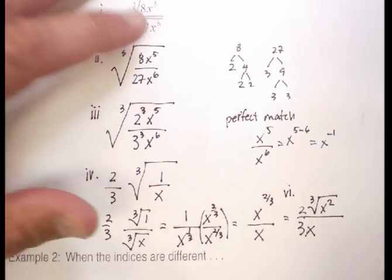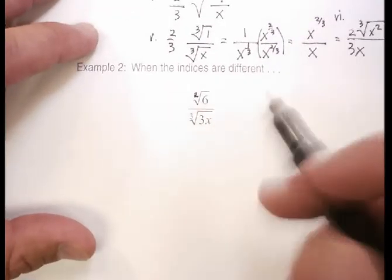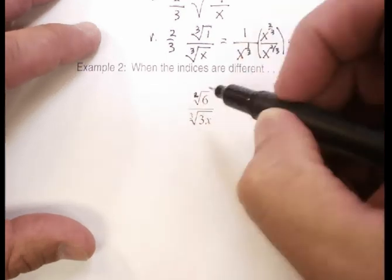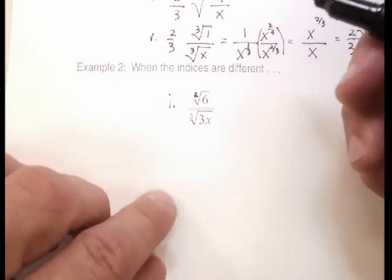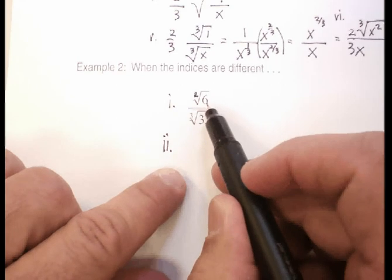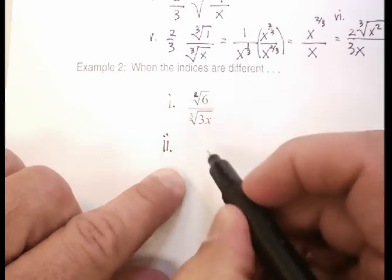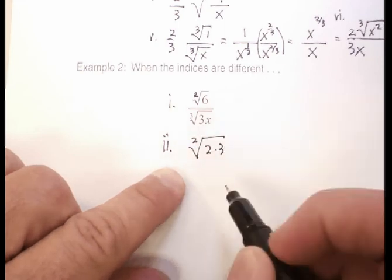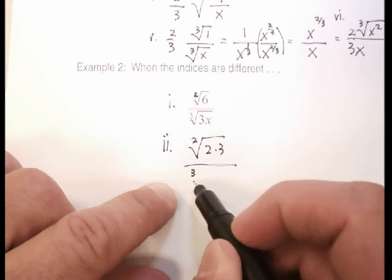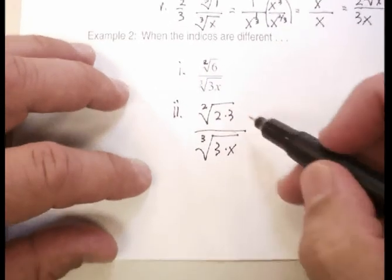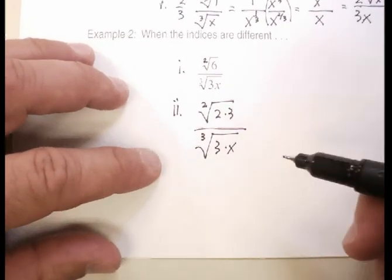Now let's try the second problem — what do you do when the indices are different? For this one divided by the other, I can't put them under the same radical because the indices are different. So first I'm going to prime factor the radicands: I get the square root of 2 times 3 on top, and the cube root of 3 times x on the bottom.